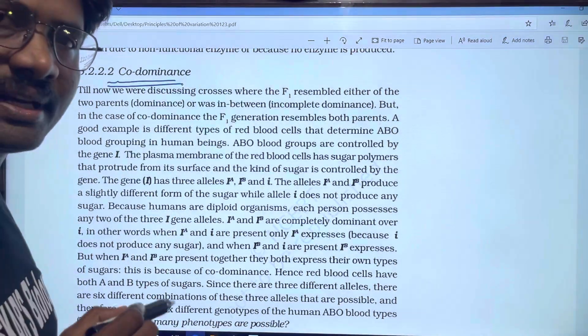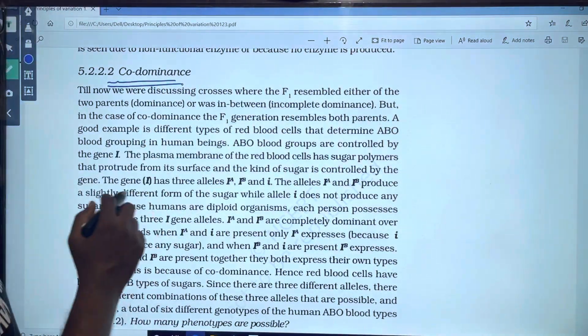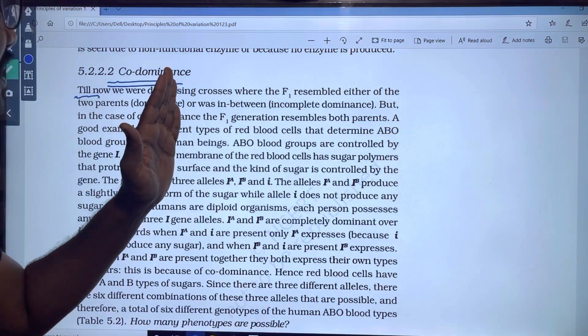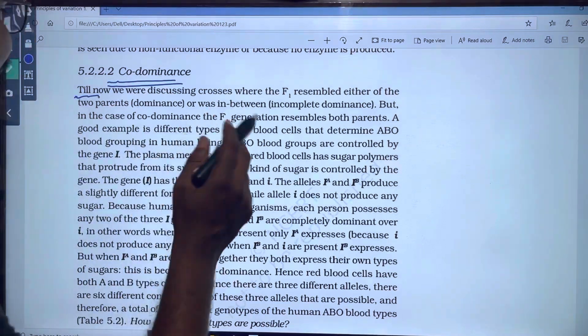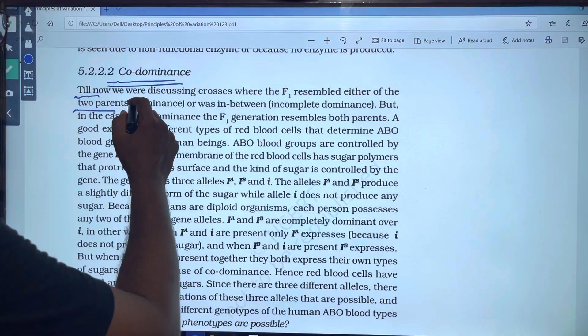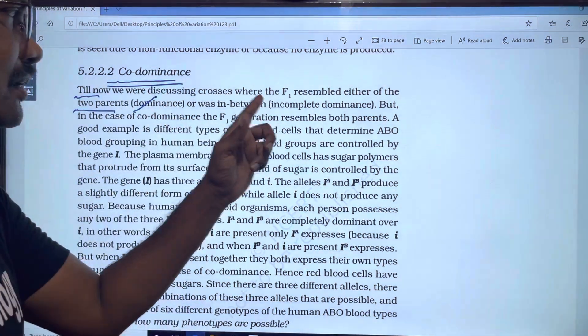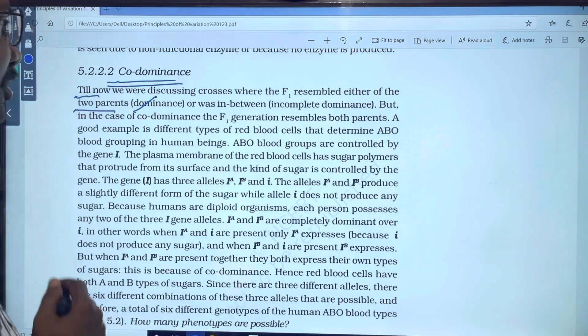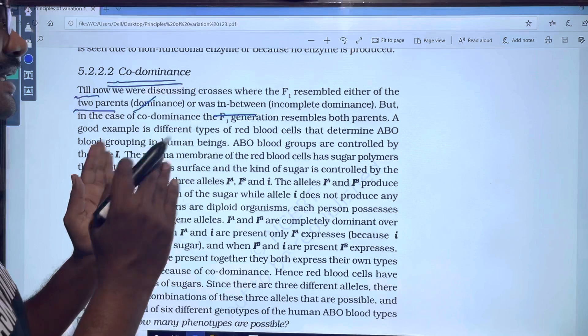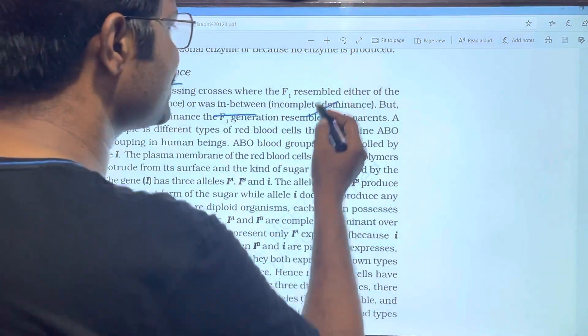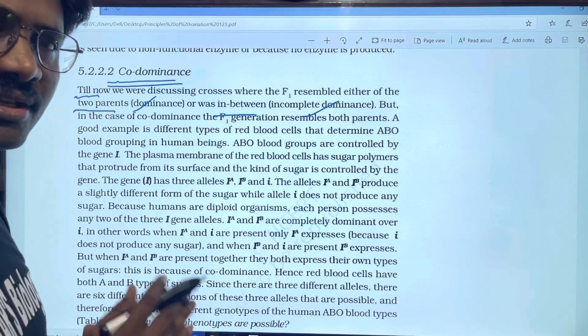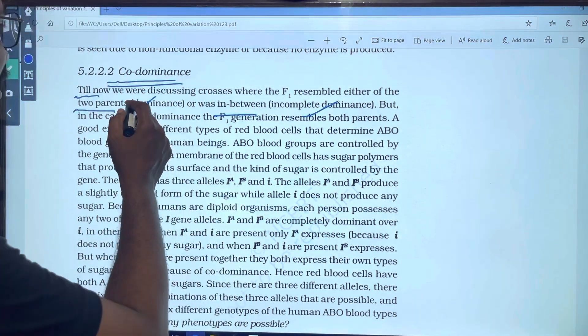When I was talking about co-dominance, I already mentioned this. Now we were discussing crosses where F1 resembles either of the two parents, so two parents have a resemblance - this one we are talking about dominance, in F1 generation parents with a character that is dominant.